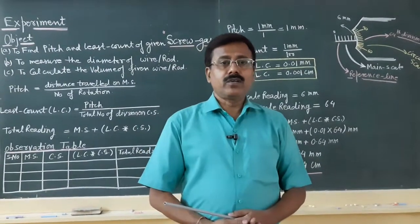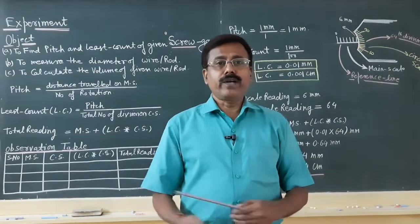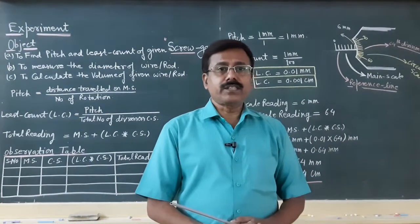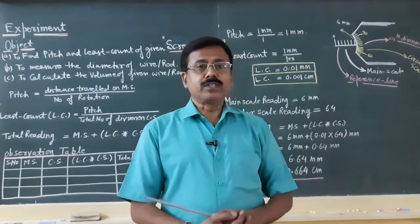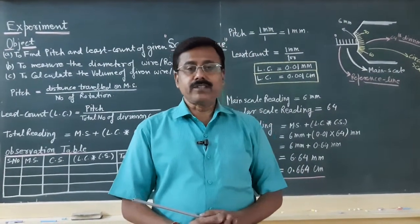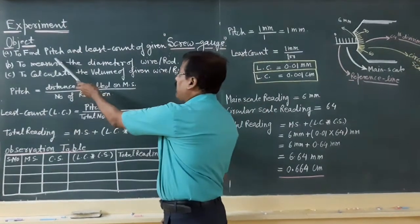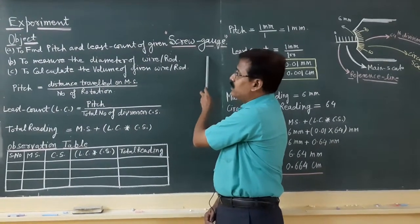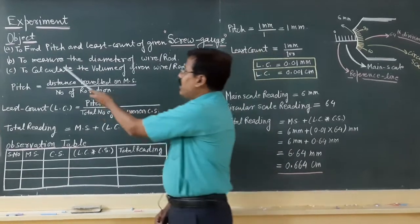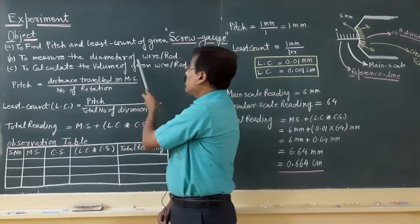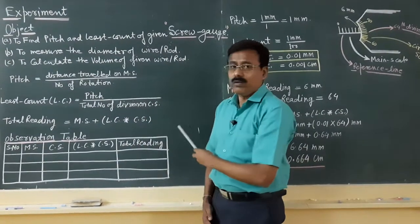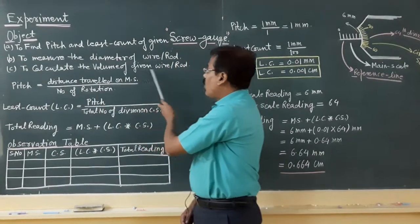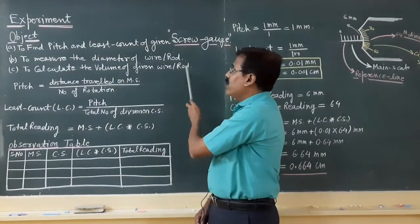Today we will discuss the instrument screw gauge. The objectives for this experiment are: first, to find the pitch and least count of the given screw gauge; second, to measure the diameter of the given wire or rod; and third, to calculate the volume of the given wire.